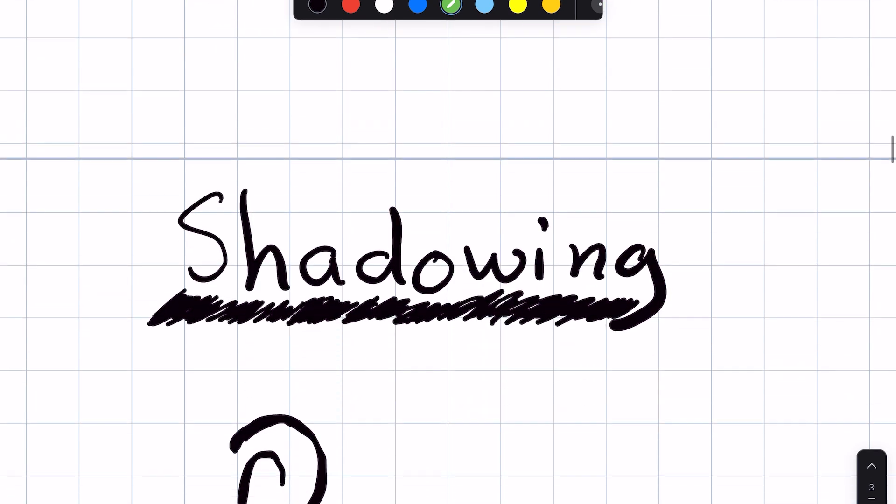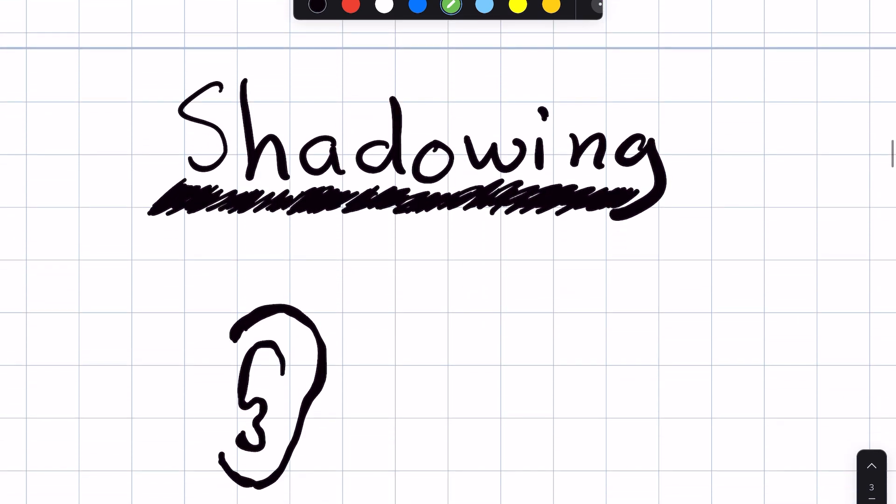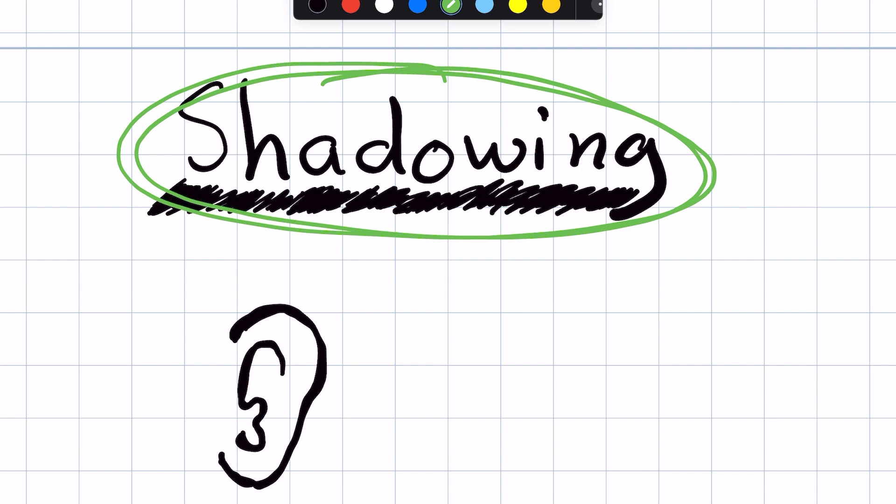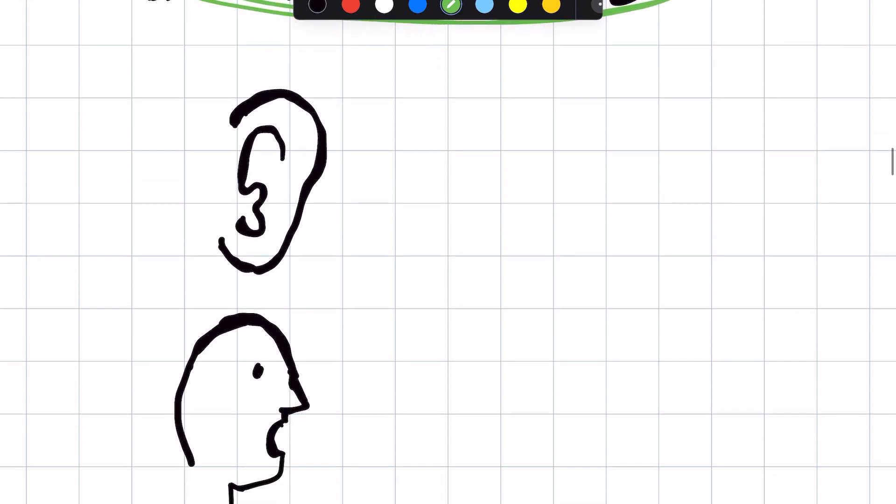So the technique I'm going to introduce to you today is called shadowing. And if you're not familiar with shadowing, it's basically an activity where you listen to words and sentences and then you repeat them back out of your mouth, almost at the same time that you're hearing it.